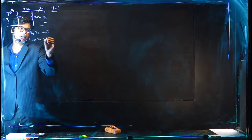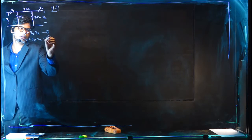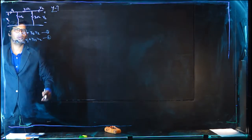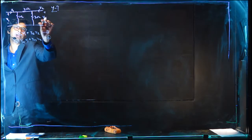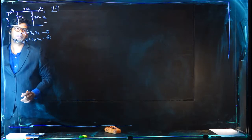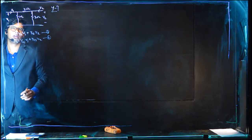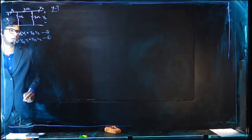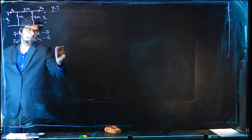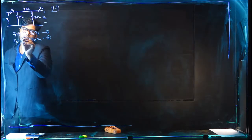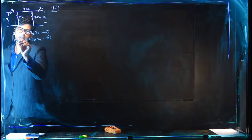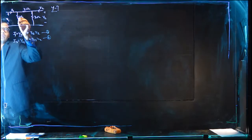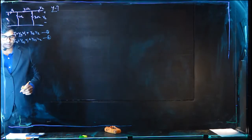The Y parameters in general are: I1 equal to Y11 V1 plus Y12 V2, and I2 equal to Y21 V1 plus Y22 V2. These are the standard Y parameter equations — call them equation 1 and equation 2. Our main aim is to get Y11 equal to I1 by V1, so we apply KCL.